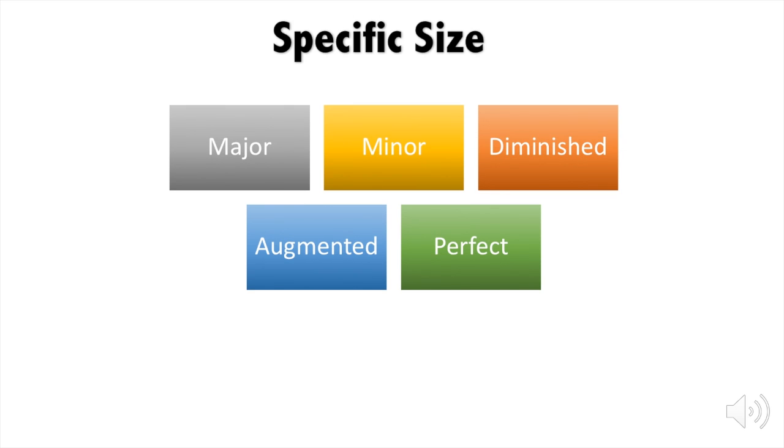We have classified these specific sizes into different families. They are major intervals, minor intervals, perfect intervals, augmented intervals, and diminished intervals. Each family has their own characteristics and properties. For example, the perfect family has a very hollow and unison sound to it.